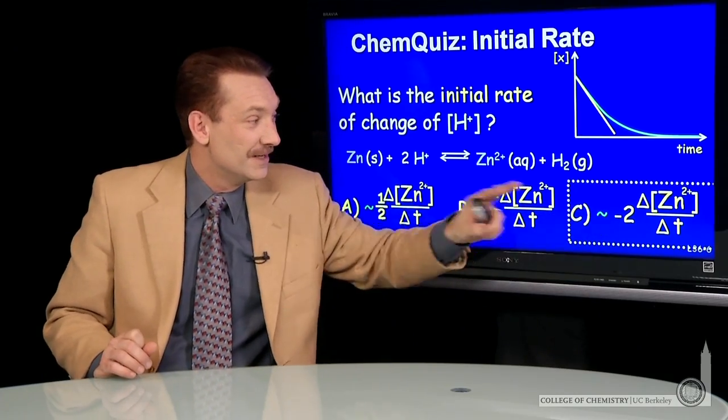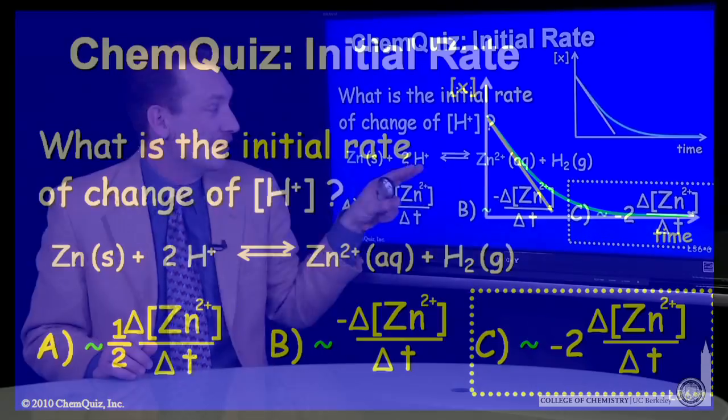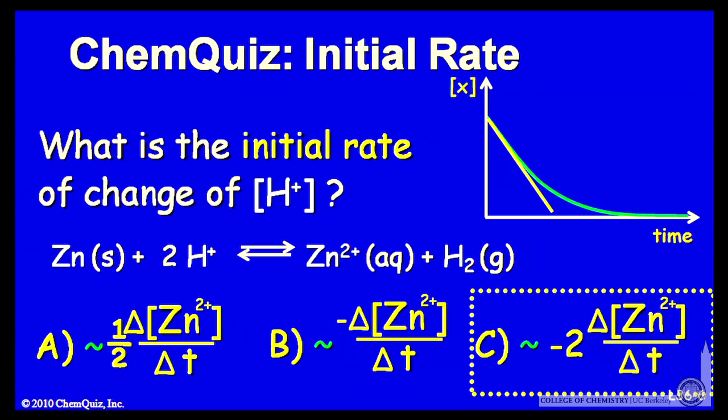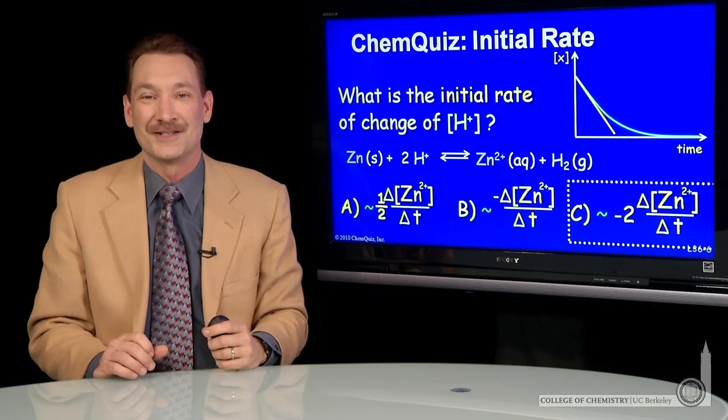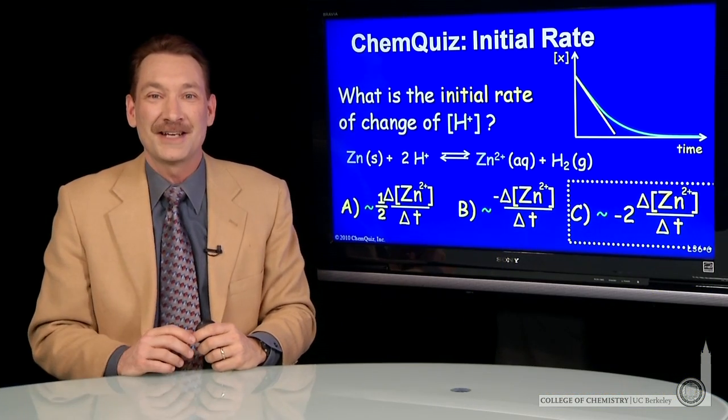And that is, of course, C here. The rate of change of hydrogen ions looks like twice minus the rate of change of the zinc ion concentrations. In this case, the correct answer is C.